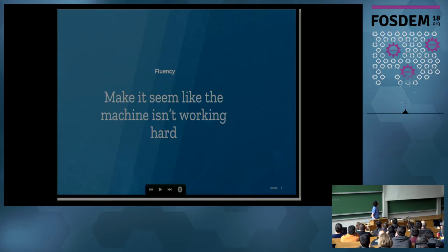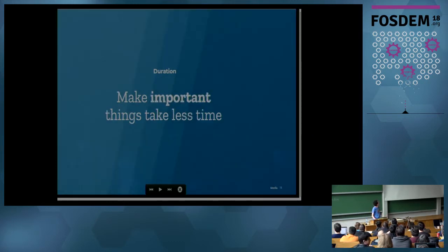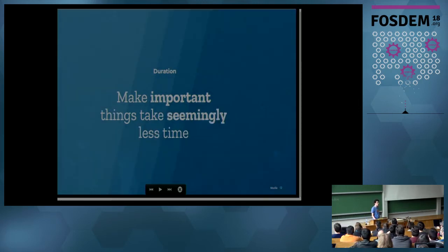We also had to make fluency. Fluency is making it look like the machine is not working hard. So this is, for example, while you are scrolling on a page, if it stops somehow and then starts again, it will look like something is really working hard in the background, but your machine is not performing well or the browser is slow and we really want to avoid that. And duration is just making it take less time. It's not for everything. It's just important things. So we had to identify what matters, what were the important things.